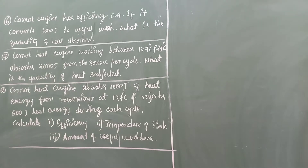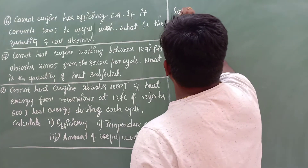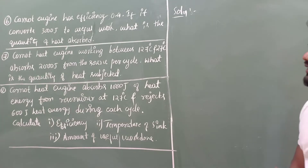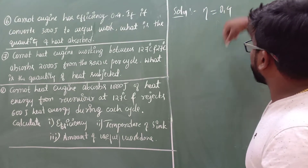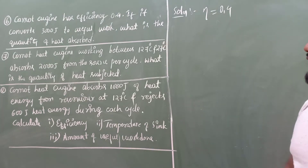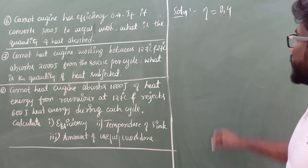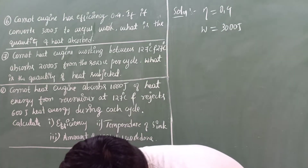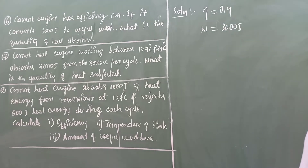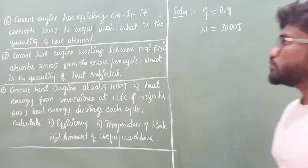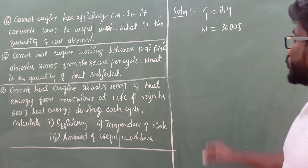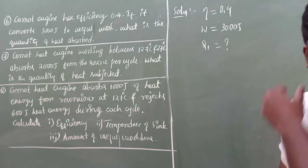Let us take question number six — it's a very simple question and the solution is also simple. We have a Carnot engine whose efficiency eta is given as 0.4. It converts 3000 Joules to useful work, so W equals 3000 Joules. What we need to find is the quantity of heat absorbed, that is the value of Q1.